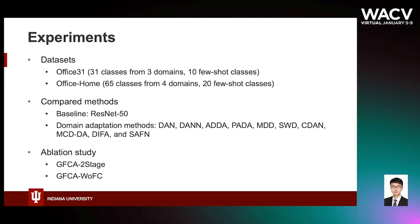We also compare GFCA with its two variants. The first variant is GFCA two-stage, where data augmentation and domain adaptation in GFCA are performed in two stages. The second variant is GFCA without FC, where the fair classification regularization term on the classifier is removed.